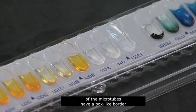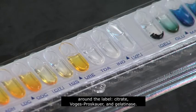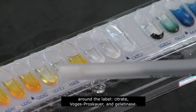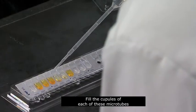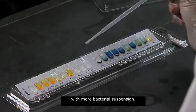Notice that three of the microtubes have a box-like border around the label: Citrate, Vogue-Proskauer, and Gelatinase. Fill the cupules of each of these microtubes with more bacterial suspension.